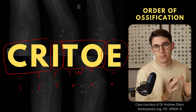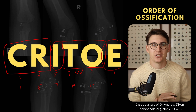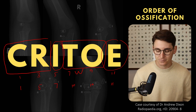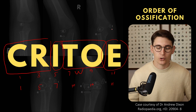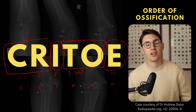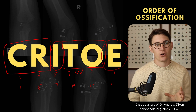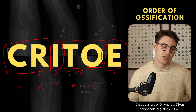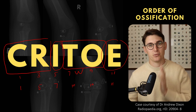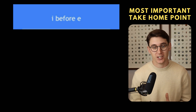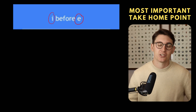Girls often develop earlier than boys, up to two years earlier, so these numbers are very flexible and we're never going to be super accurate when trying to determine age from an elbow radiograph. If you're going to take one thing from this talk, let it be this: your internal epicondyle should always develop before your external epicondyle — it should actually always develop before the trochlea, olecranon, and external epicondyle. If you can't see an internal epicondyle but you can see an external epicondyle, then there's something wrong and you need to go looking for a fracture. There's a saying in English: 'I before E except after C' — I comes before E. When it comes to remembering that the internal comes before the external, it's a great way to remember that.